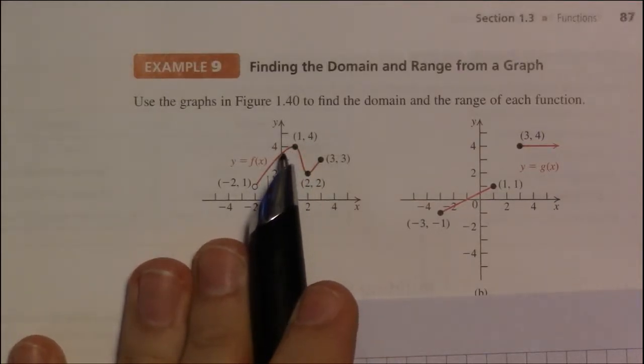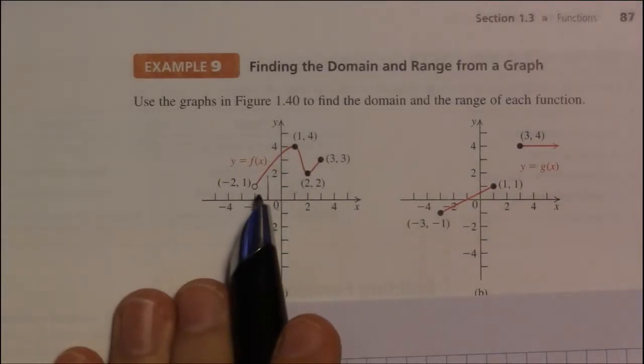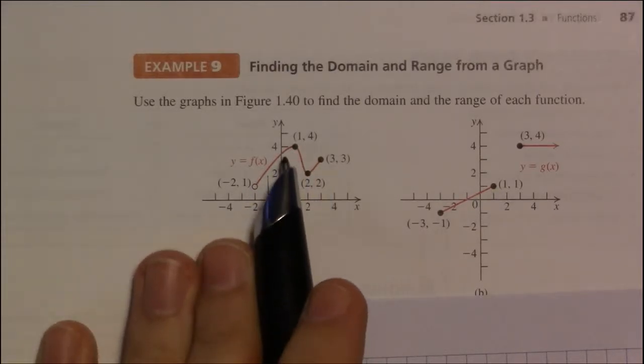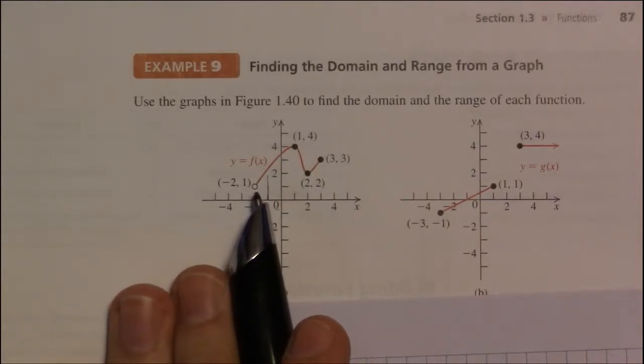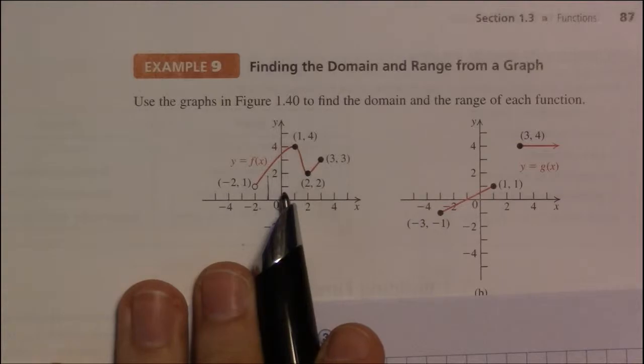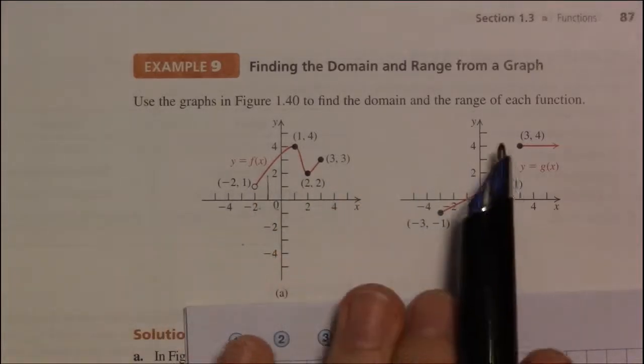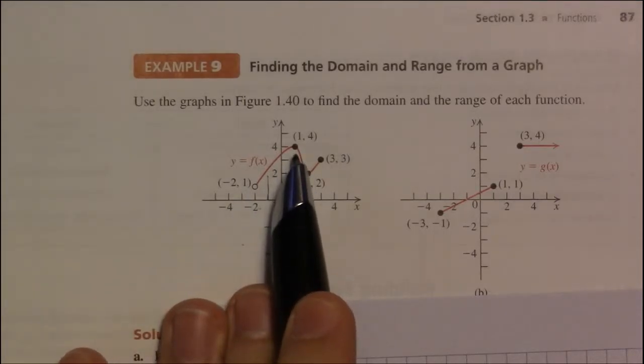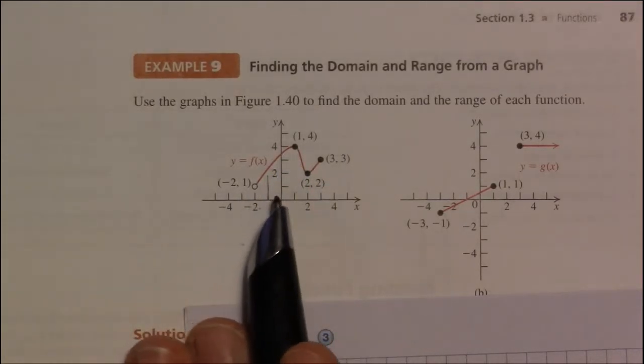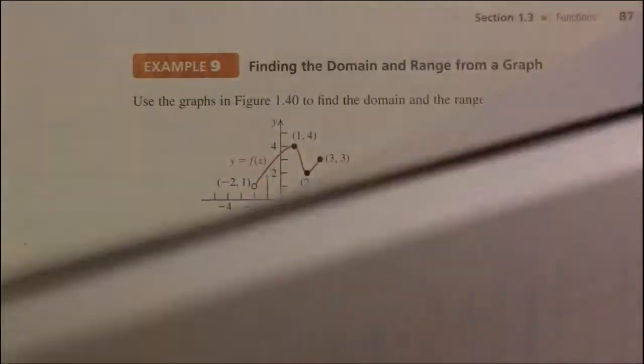So, when we smash this to the y-axis, 4 is going to be covered, and everything in between 1 and 4 is going to be covered by bits of smashed graph. So, we have all y values are in the range, excuse me, the range consists of all y values between 1 and 4, where we include 4 and exclude 1. So, that's going to look like, let me flip it over,